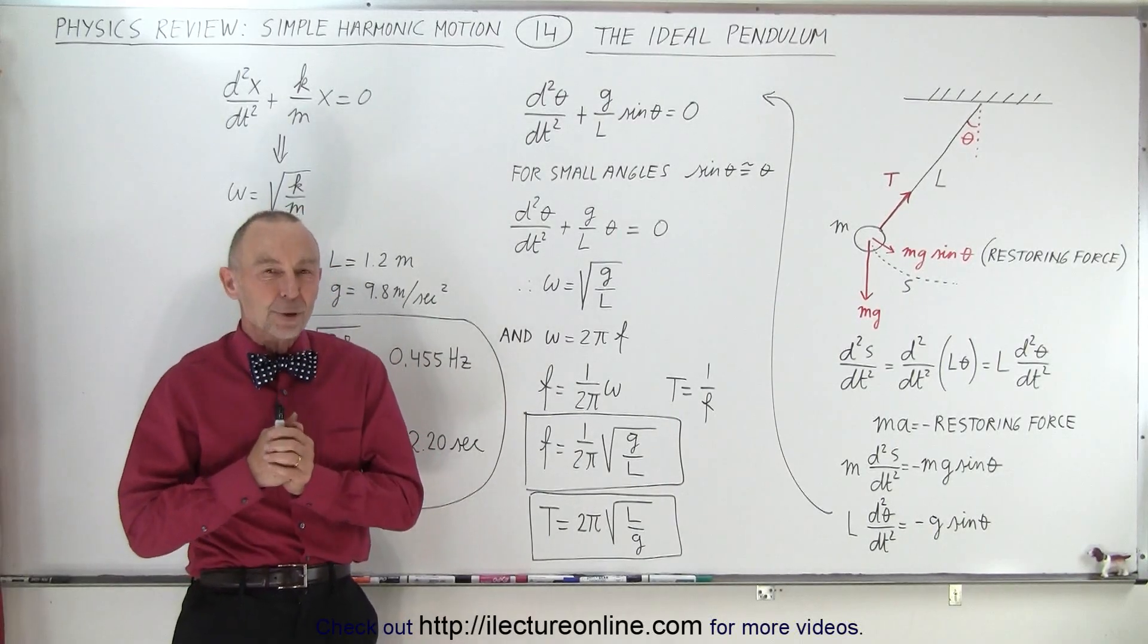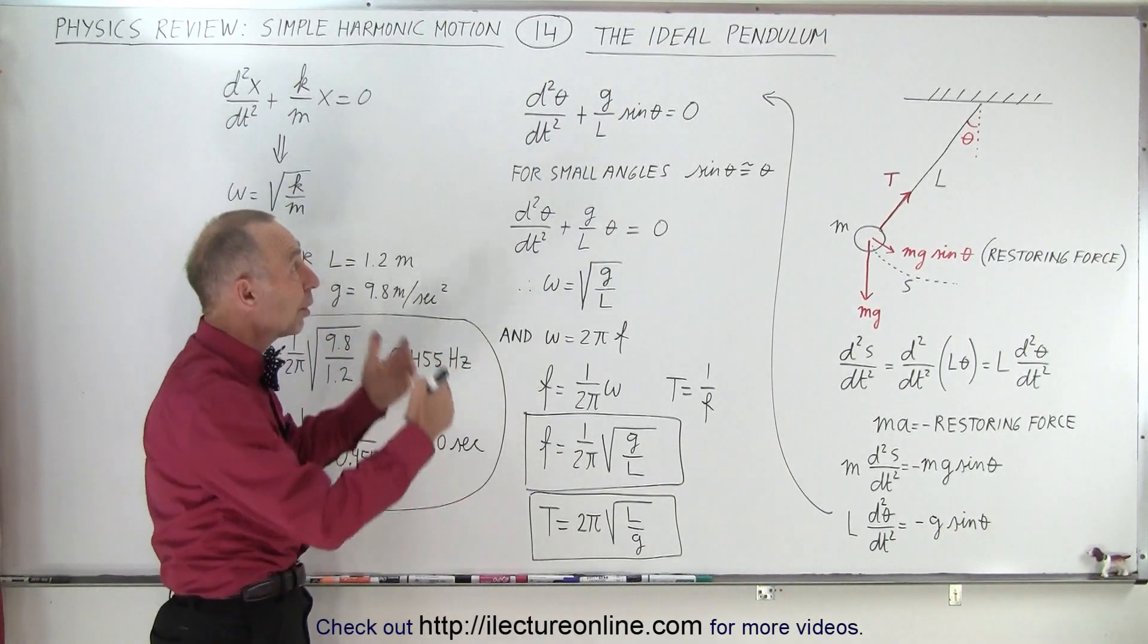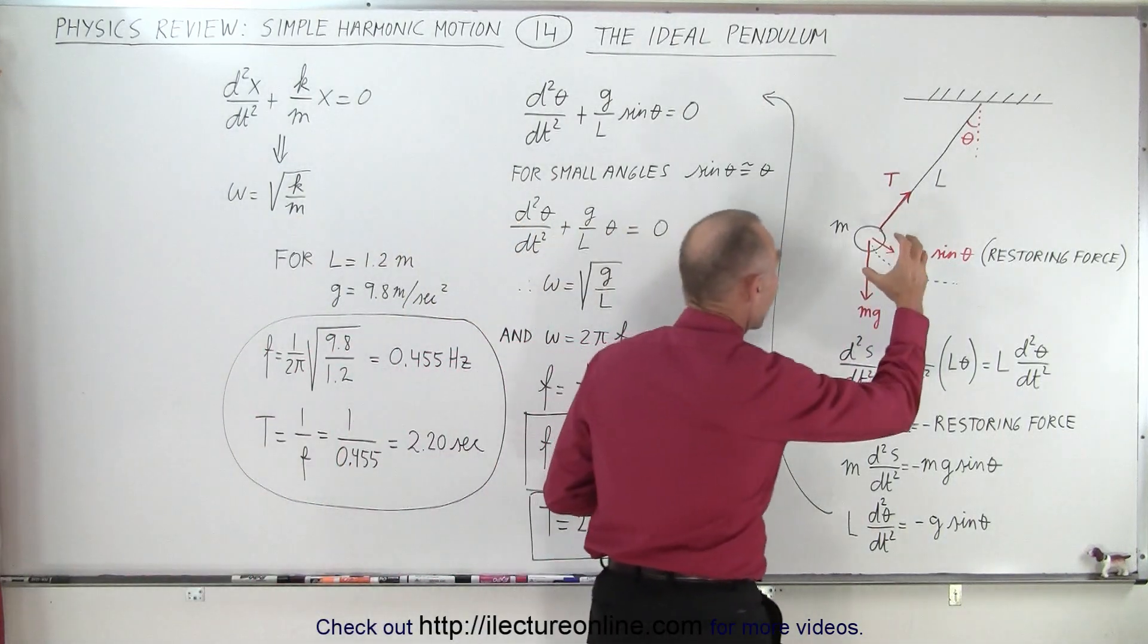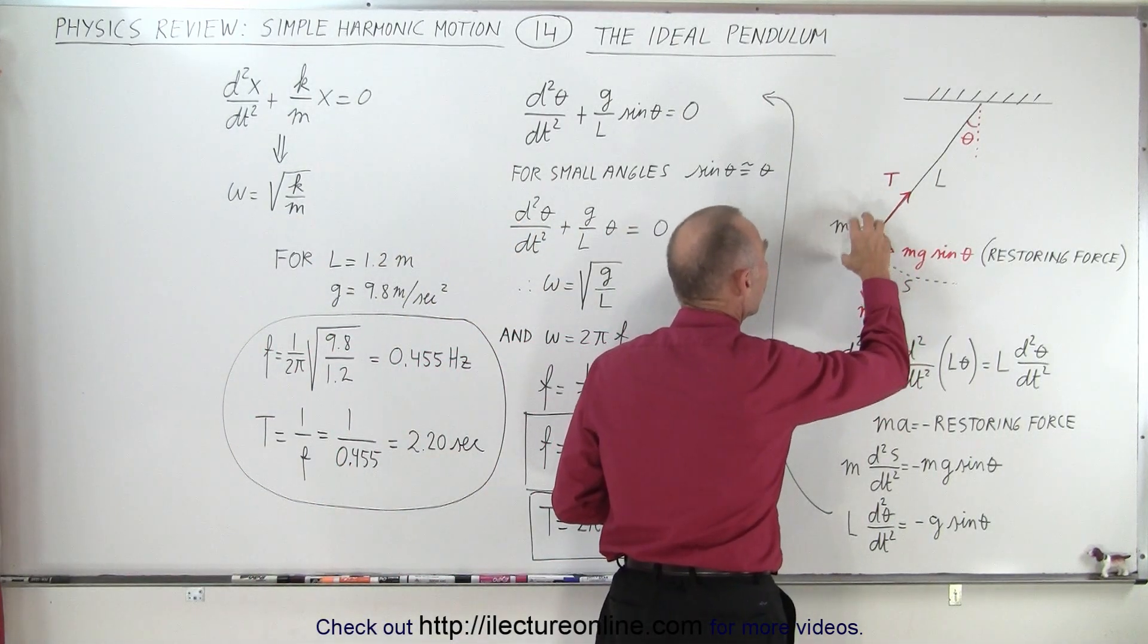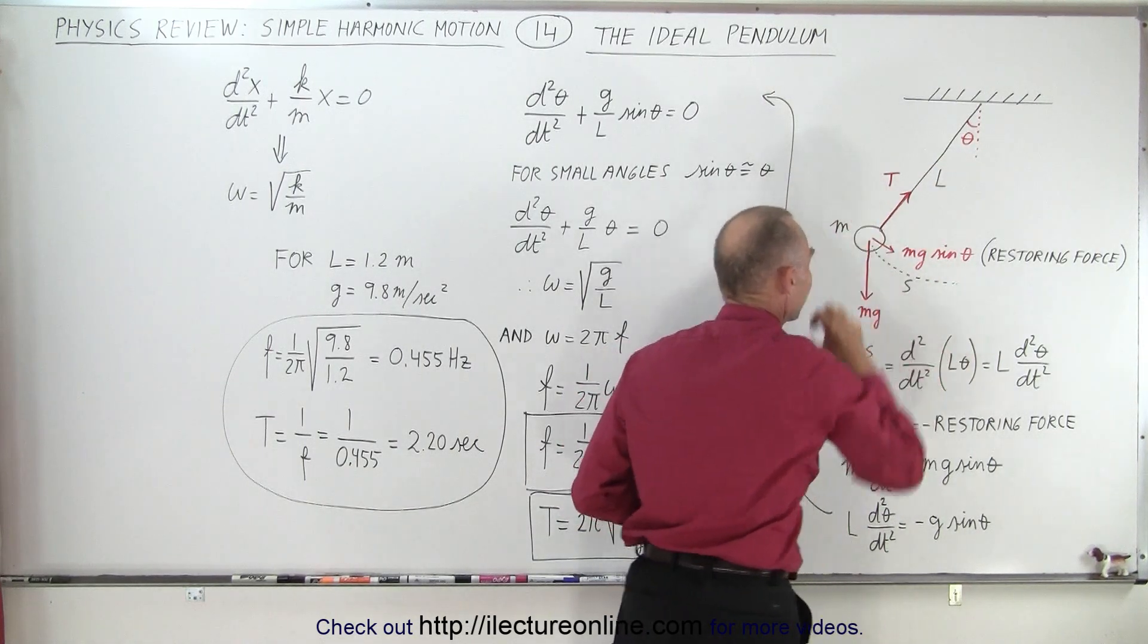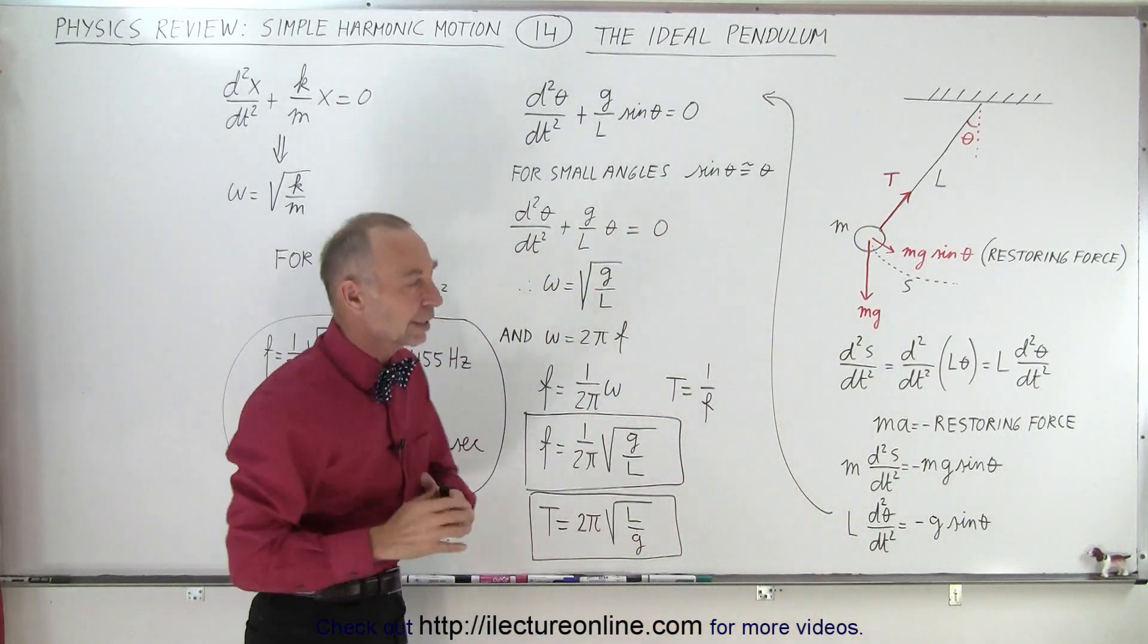Welcome to our lecture online. Here we're going to talk about the ideal pendulum. An ideal pendulum is a pendulum where all the mass is at the farthest end away from the support string. So the string is essentially massless and all the mass of the pendulum is over there. That's called an ideal pendulum.